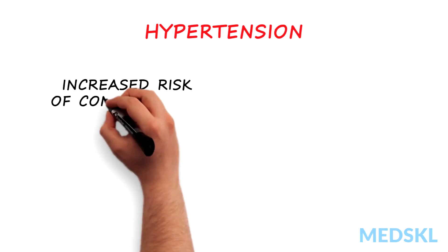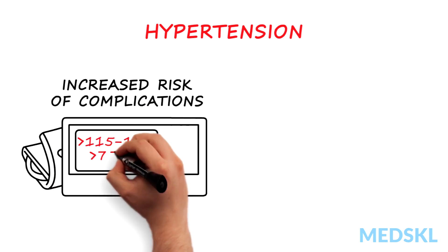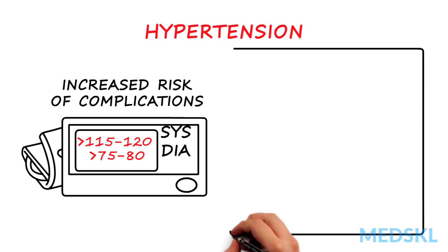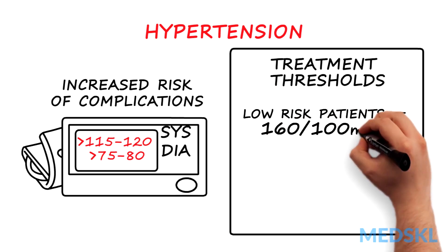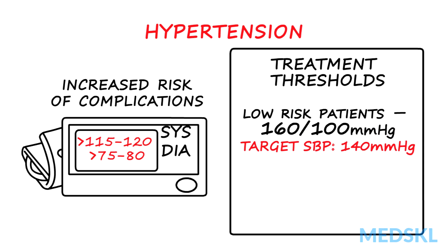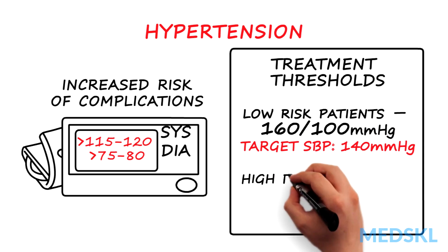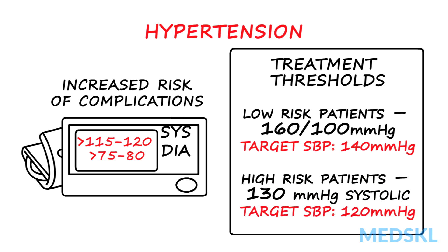Increased risk for hypertension-related complications occurs at blood pressures of greater than about 115 mmHg systolic. However, the threshold blood pressures for initiating treatment range from as high as 160/100 mmHg for those at very low risk of hypertension-related cardiovascular complications, to as low as 130 mmHg for those at highest risk. The corresponding target blood pressures based on those thresholds are 140 and 120 mmHg systolic blood pressure, respectively.